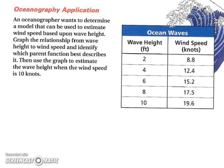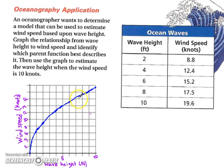When you come back, the graph will be there. Alright, so now that we have our graph, we can use the graph to estimate the wave height when the wind speed is 10 knots. So at 10 knots, we go across and it's going to be about 2.5 feet high.